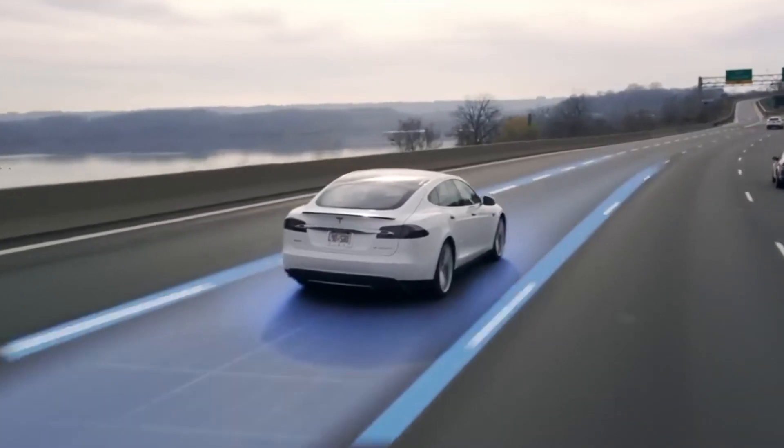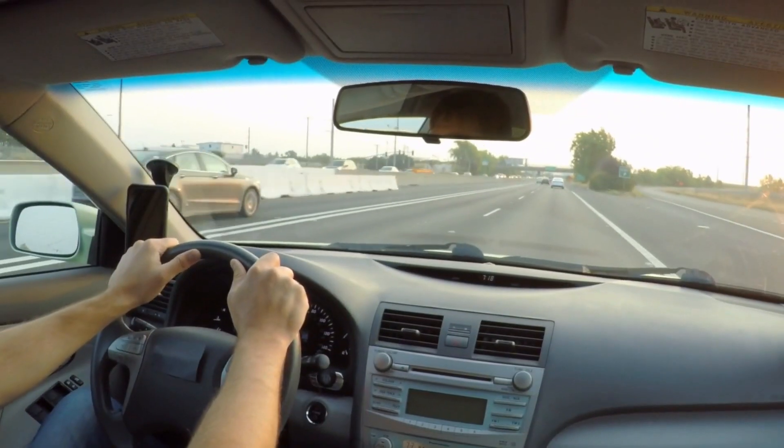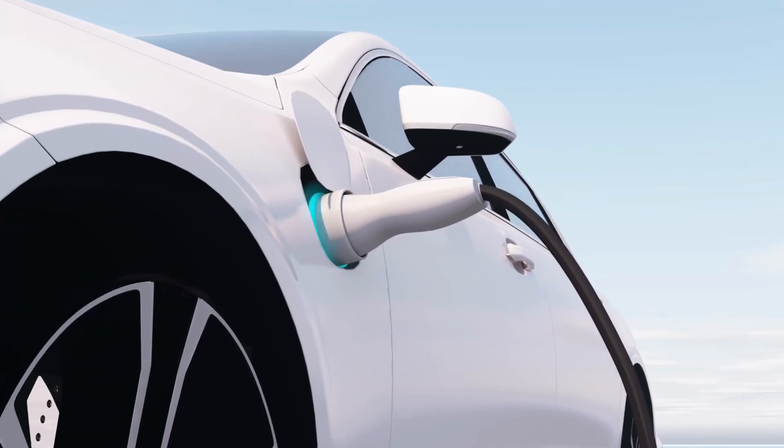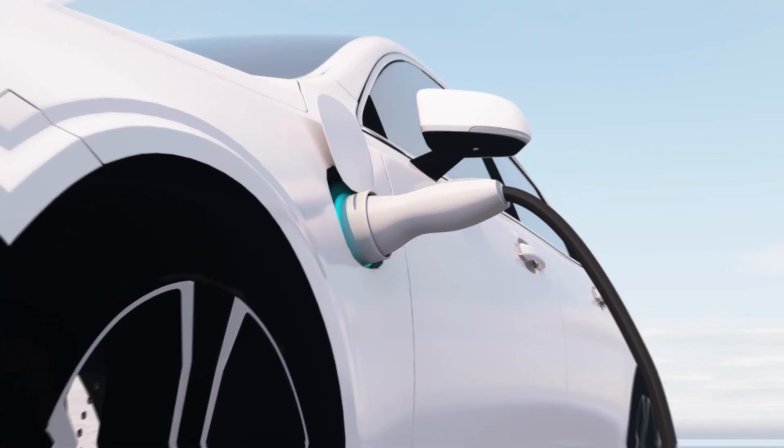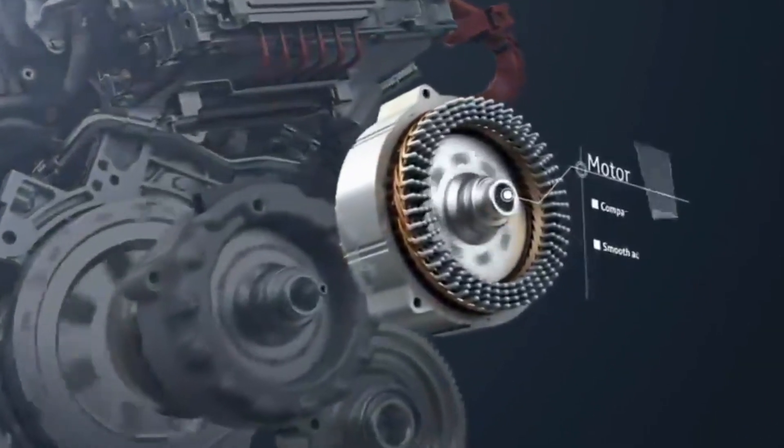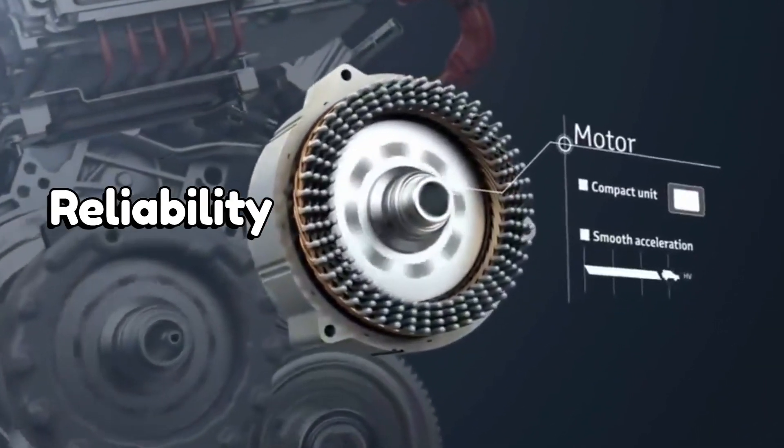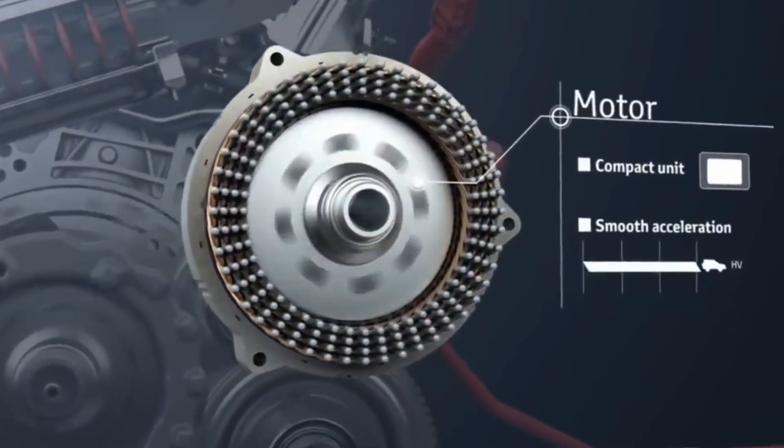Now we all know that Tesla has been both loved and criticized for various reasons, but there's no denying that they're a driving force in the world of EVs, and the hairpin engine is no exception. With its unique design, this motor boasts increased efficiency, power, and reliability compared to traditional electric motors.